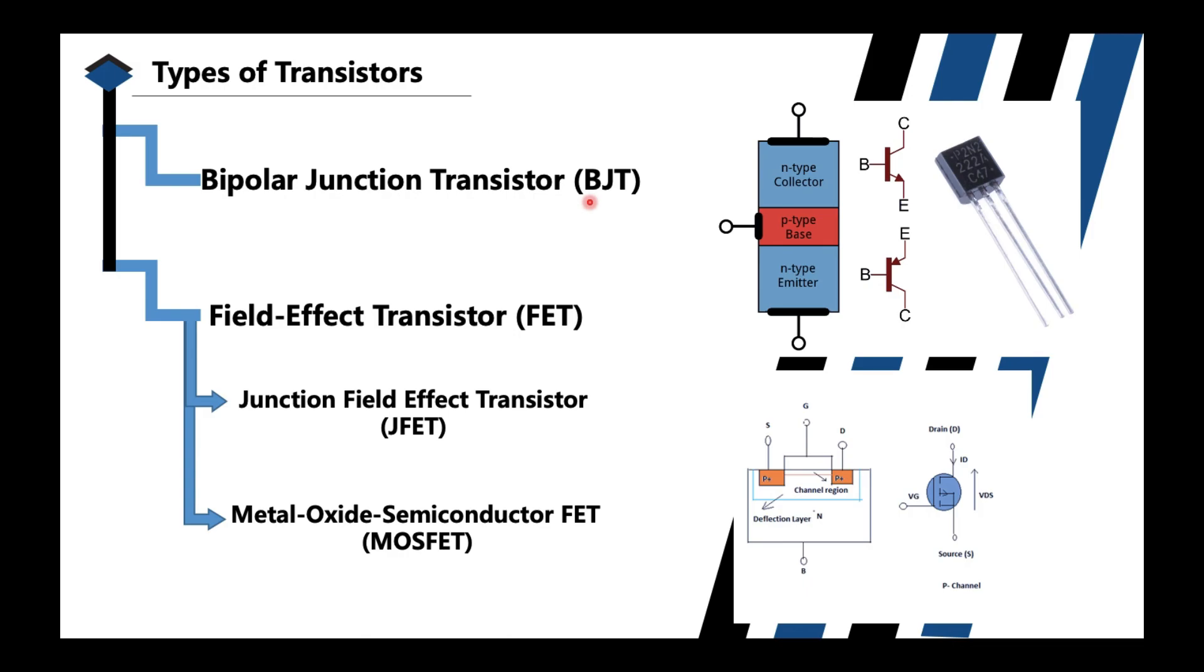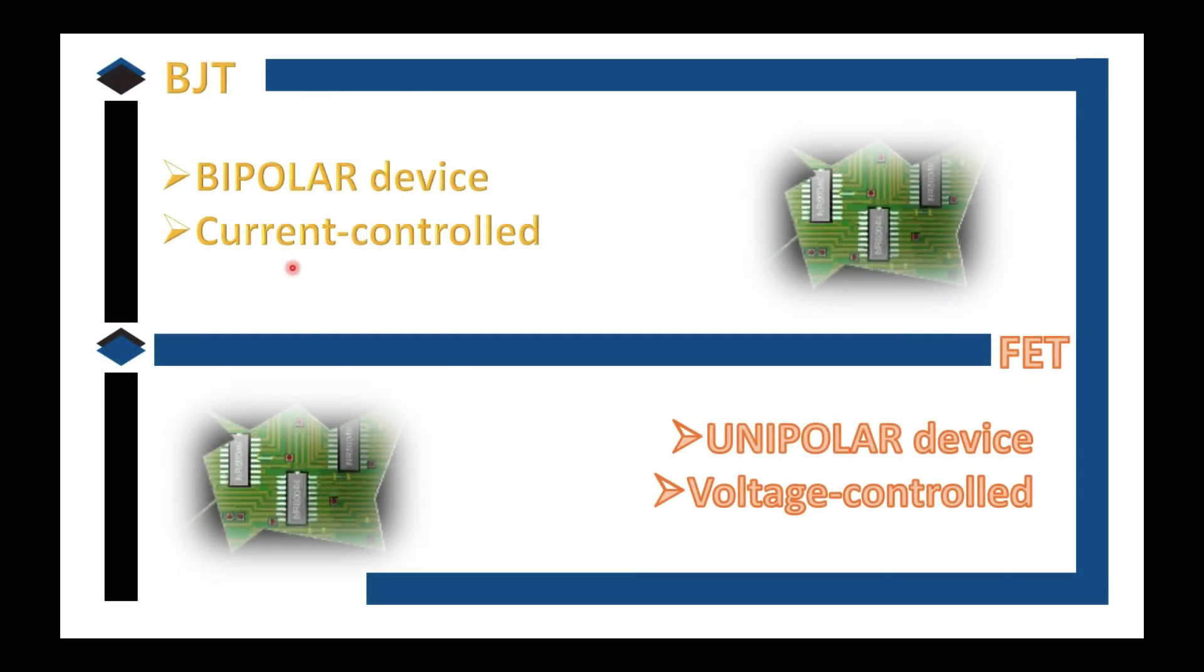So what's the main difference between a BJT and FET? A BJT is a bipolar device while an FET is a unipolar device. At the same time, BJT is current controlled while FET is voltage controlled. Later on in the operation of BJT, you will see how current controls the operation of our BJT device. Later on also you will know the difference about bipolar and unipolar.